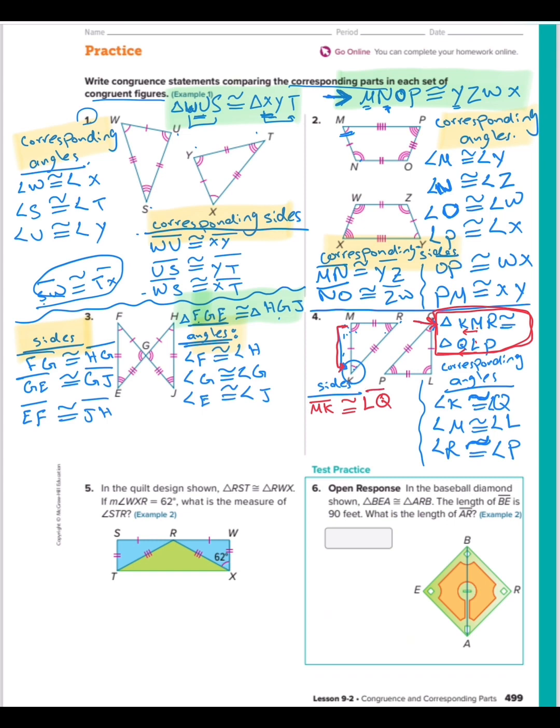Then MR with LP. MR with LP. The last one, RK congruent. RK with PK. So now we finish question number four.